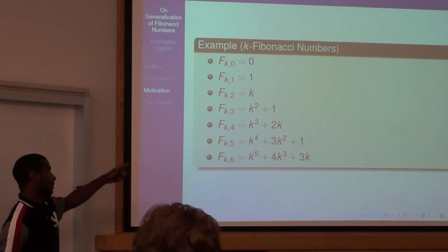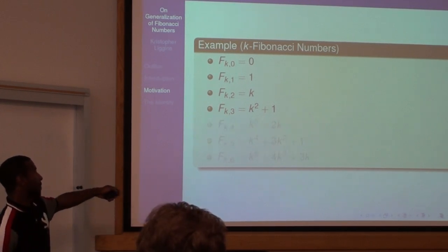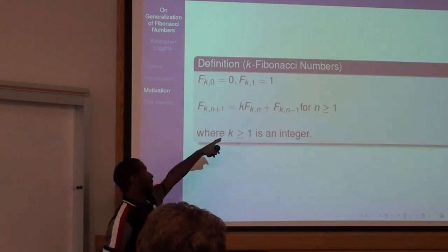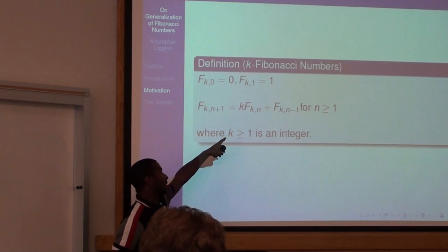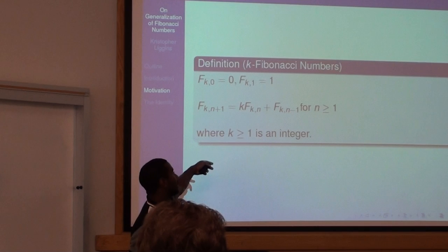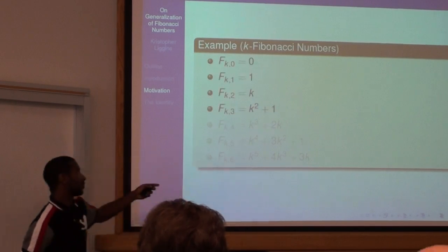k times k plus one would be k squared plus one. And this is the sequence for the recurrence relation I'm talking about. If you put one in there, k times one plus zero will give you the next term.